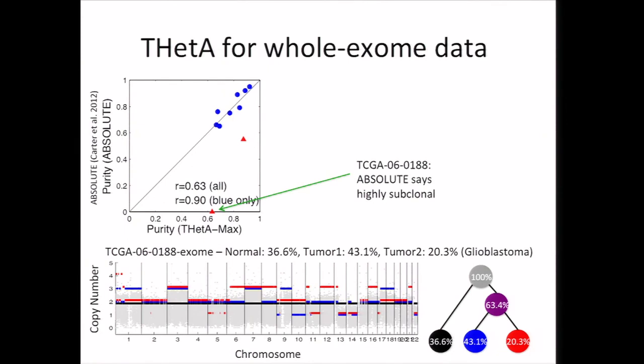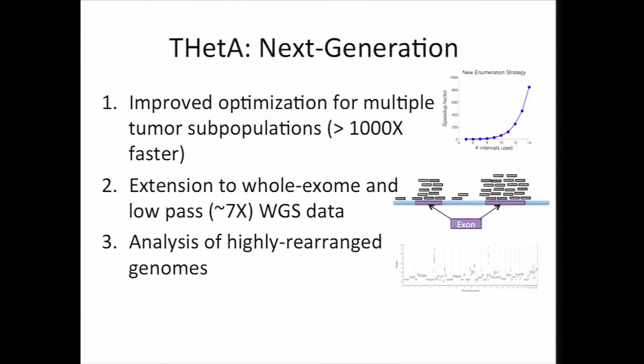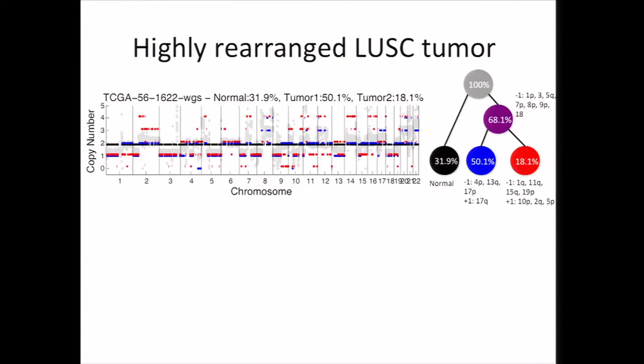We've also applied THetA to low-pass data. Here is a reconstruction for a pretty rearranged breast cancer genome, and we've looked at several other breast cancers with this as well. Moving on to my last point, we've done some things that allow THetA to actually be applied to really highly rearranged genomes. This is one example of a lung cancer genome where we infer two different populations in 50 percent and 18 percent of cells.